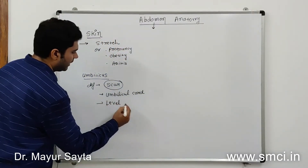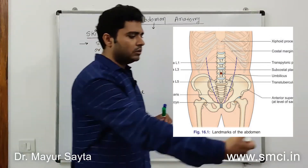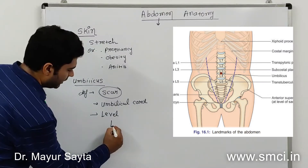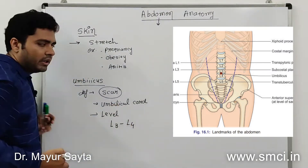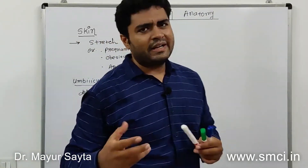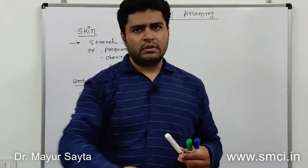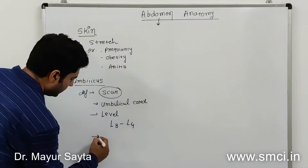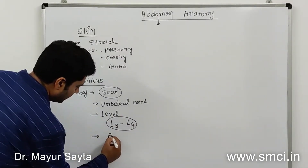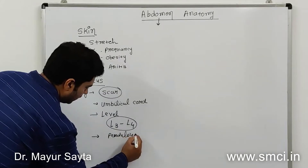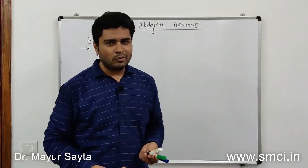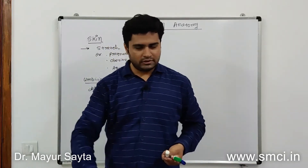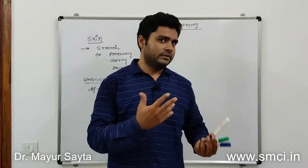The level of the umbilicus: if we pass a transverse plane parallel to the ground, it is located between L3 and L4 — the third and fourth lumbar vertebrae — at the level of the intervertebral disc. However, in a person with a pendulous abdomen or obesity, the umbilicus may be located at a lower level.